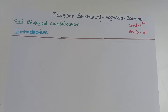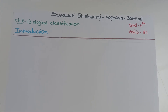Hello students, welcome to the biology world. Today we are starting the second chapter in this unit of diversity of living organisms, and that is biological classification. We need to have some historical background about how this classification system actually evolved and which one is used right now. In the first chapter we already discussed why classification is needed and its uses.